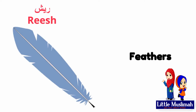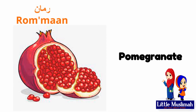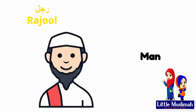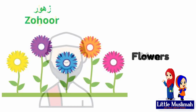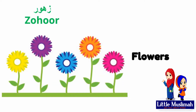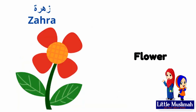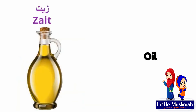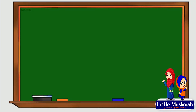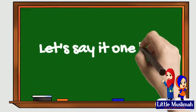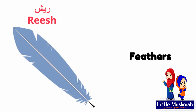Let's say it one more time. Reesh — feathers. Rumman — pomegranate. Rajul — man. Zuhur — flowers. Zarafah — giraffe. Zahra — flower. Zayt — oil.